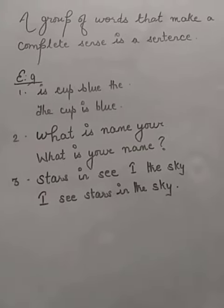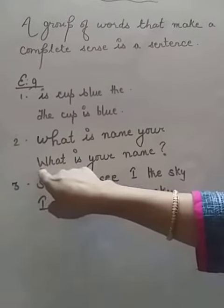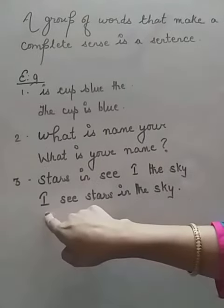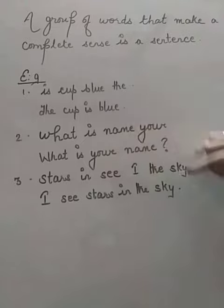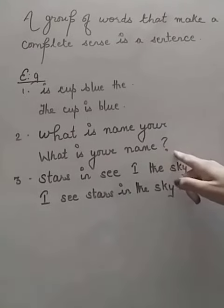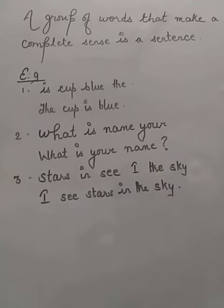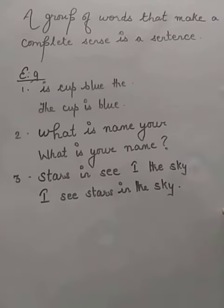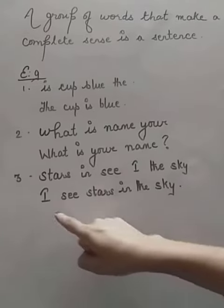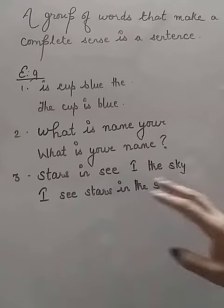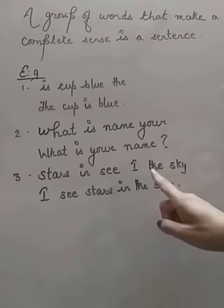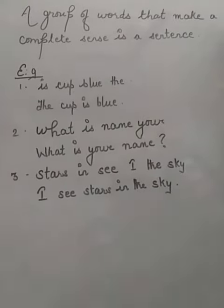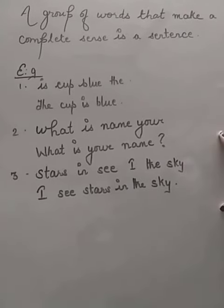What have we noticed in all this? A sentence must always begin with a capital letter — 'The', 'What', 'I' are all capital letters. And it must always end with a full stop. If it is a question, then a question mark. If it is an exclamatory sentence, then an exclamation mark. Also, 'I' is always written as a capital letter, whether in the middle or beginning of a sentence. Please note this in your copy.